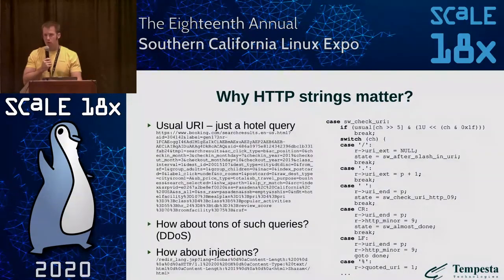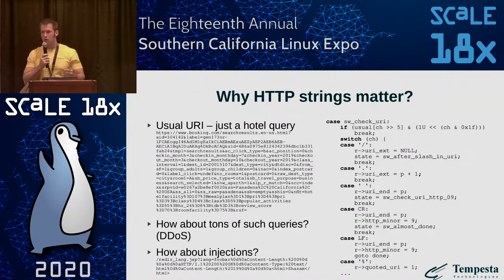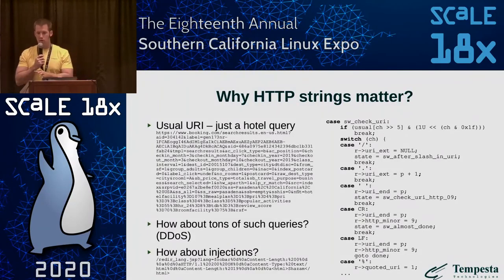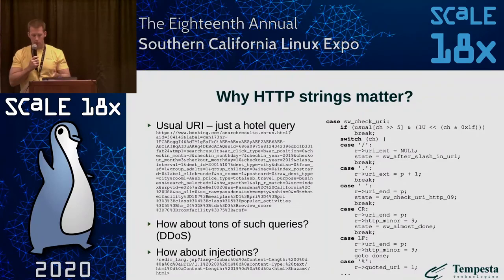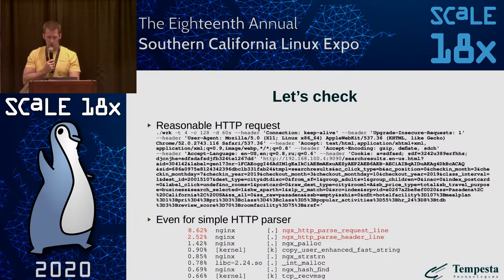Let's make a little experiment to see why string parsing actually matters. On the left side we have an example from Booking.com with a relatively large query for a hotel search. On the other side we have an example of Nginx's URI parser — a quite complicated state machine with many switch cases. If we run an HTTP flood with such a query, we can easily see that the HTTP parser becomes the bottleneck of Nginx's processing.